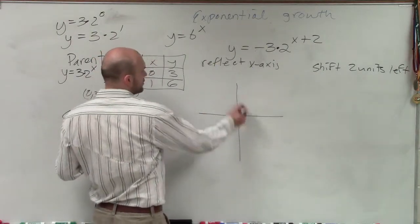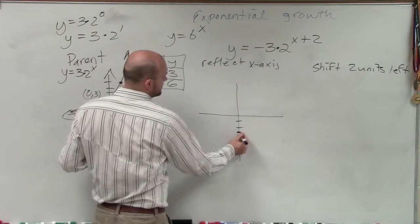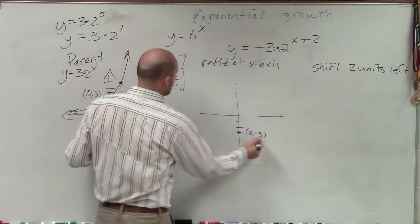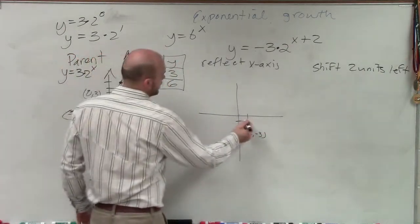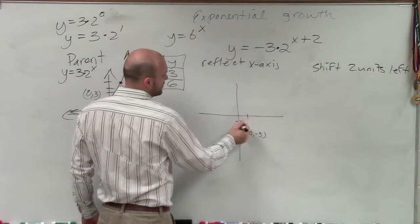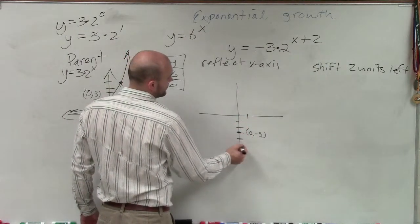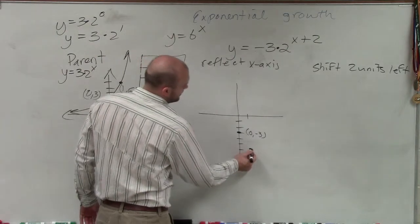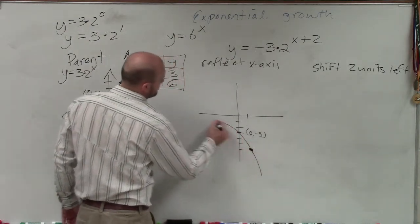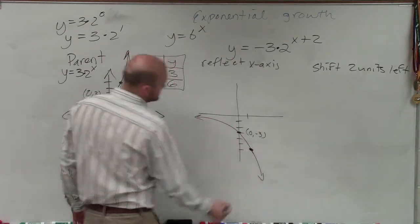So instead of having 0 up 3, I'm now going to have 0 down 3. And instead of going over 1 up 6, I'm now going to go over 1 down 6. So now I'm going to graph this as a reflection.